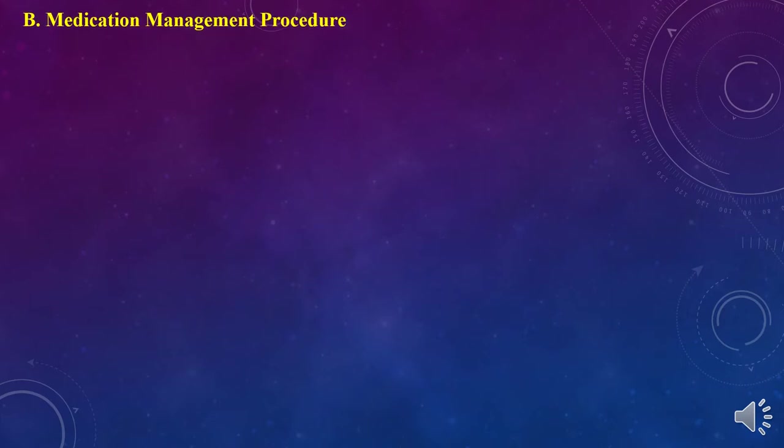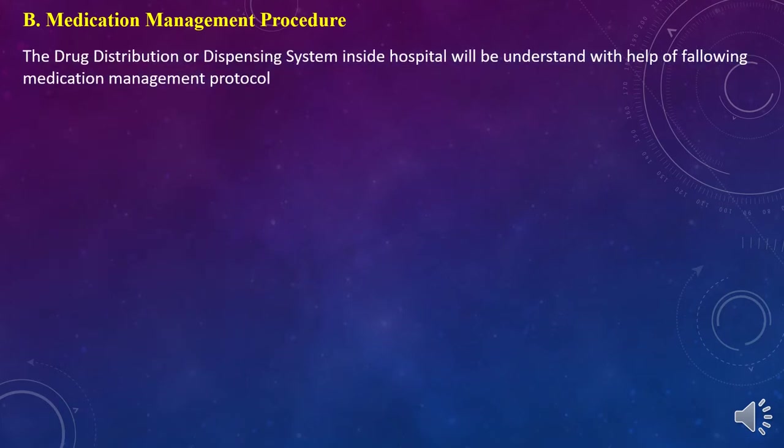The second important parameter is the medication management procedure. The drug distribution and dispensing system inside the hospital is understood through the medication management protocol. There are five important components: first is prescription, second is transcription, third is dispensing, fourth is administration, and fifth is monitoring. These are the five important components of medication management inside the hospital.